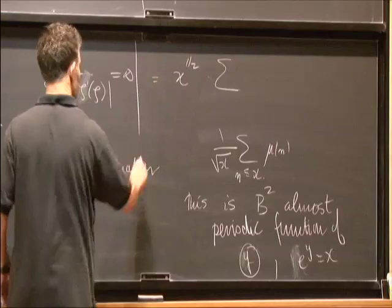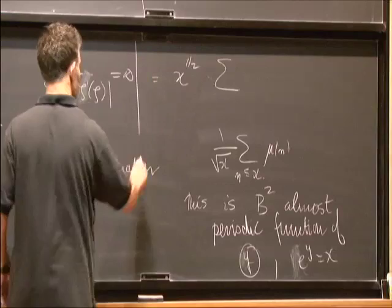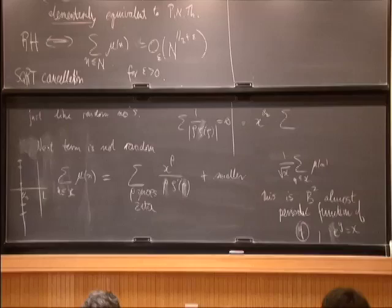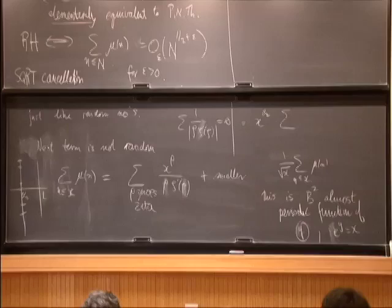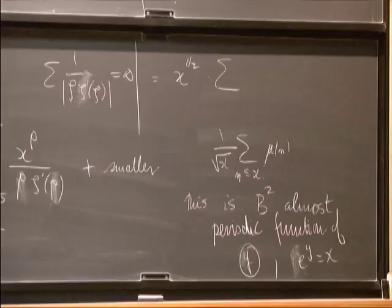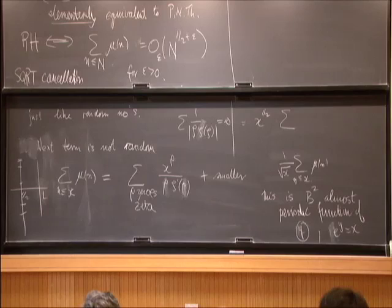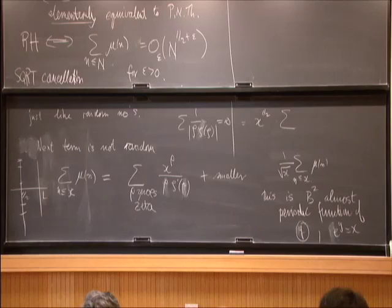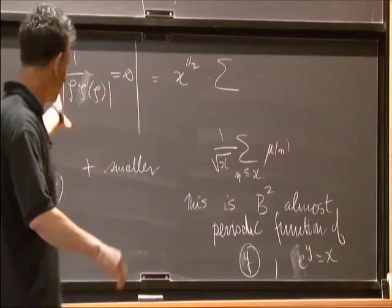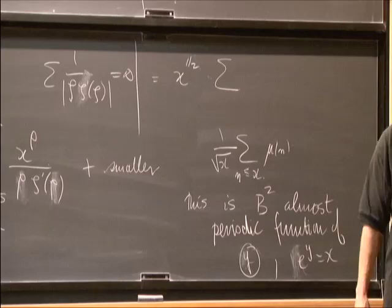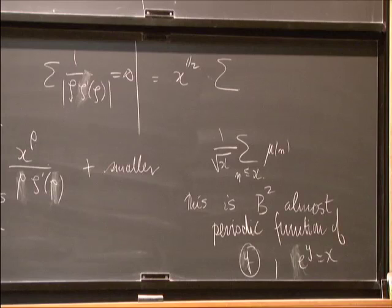So (1/√x) · Σ_{n≤x} μ(n) is a Besicovitch B² almost-periodic function of y, where e^y = x — this is the more natural variable. The assumption is Riemann plus simplicity of the zeros. This expression, which if these were really random numbers you would have a law of iterated logarithm, is not true here. There's structure at this level, and the structure is almost periodicity. Almost periodicity is no more, no less than the fact that the Riemann zeta function has zeros — these frequencies determine the behavior.